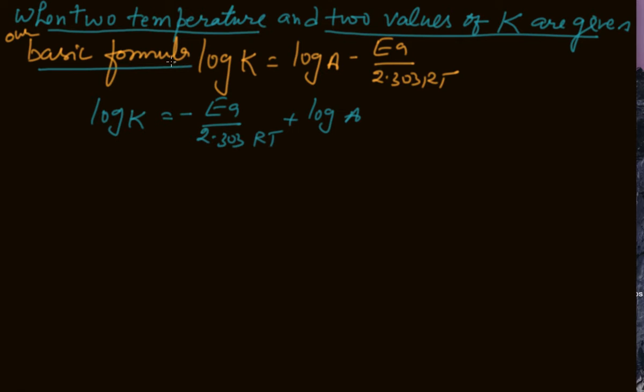then the basic formula log K equals log A minus Ea upon 2.303 RT, we can write down in this way. So Ea by 2.303 RT first, then log A.